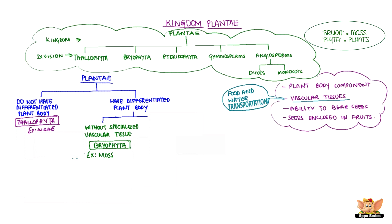Bruon in Greek means moss and Phyta indicates plant. The plants in this group have differentiation of stem and leaf-like structures, but do not have specialized vascular tissues. Bryophytes are called the amphibians of the plant kingdom because they can survive well on land as well as in water. Moss is an example of this division — you would have seen moss growing on old stone walls, especially during the rainy season.